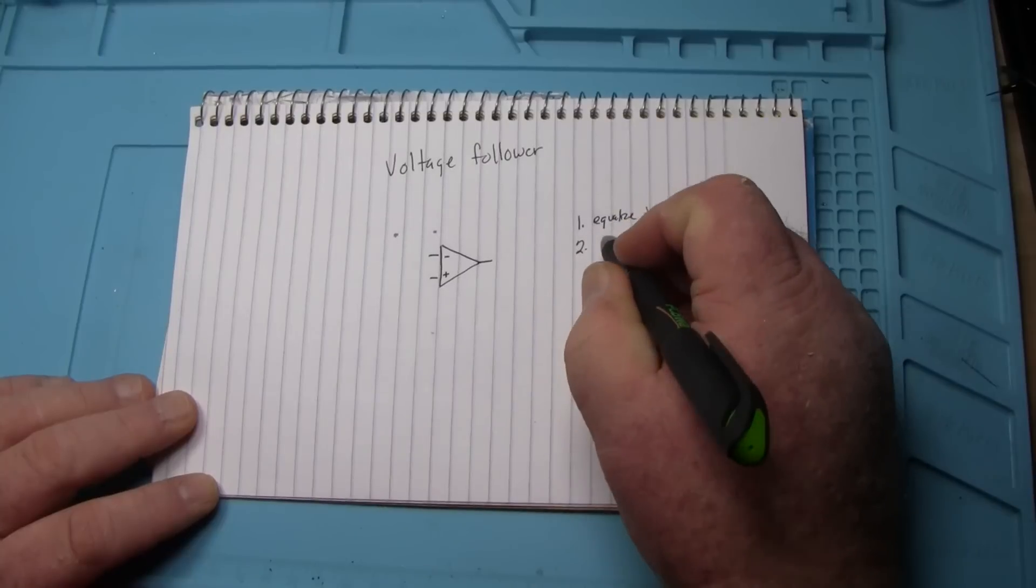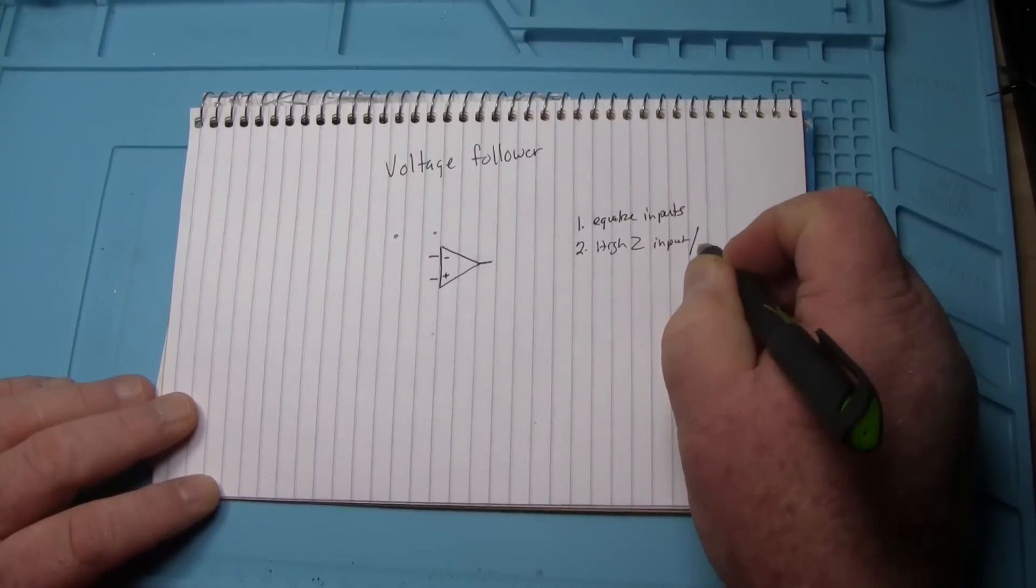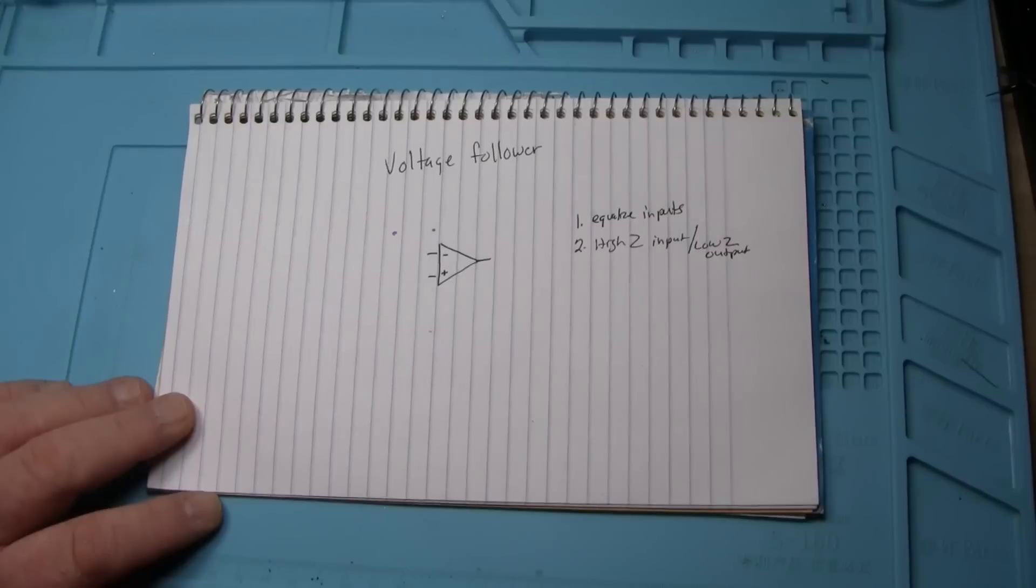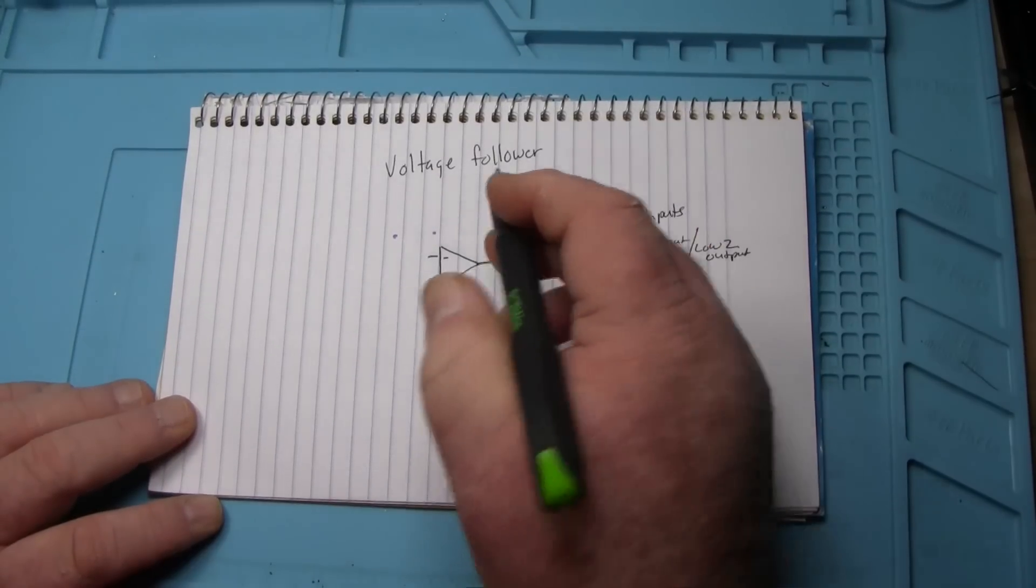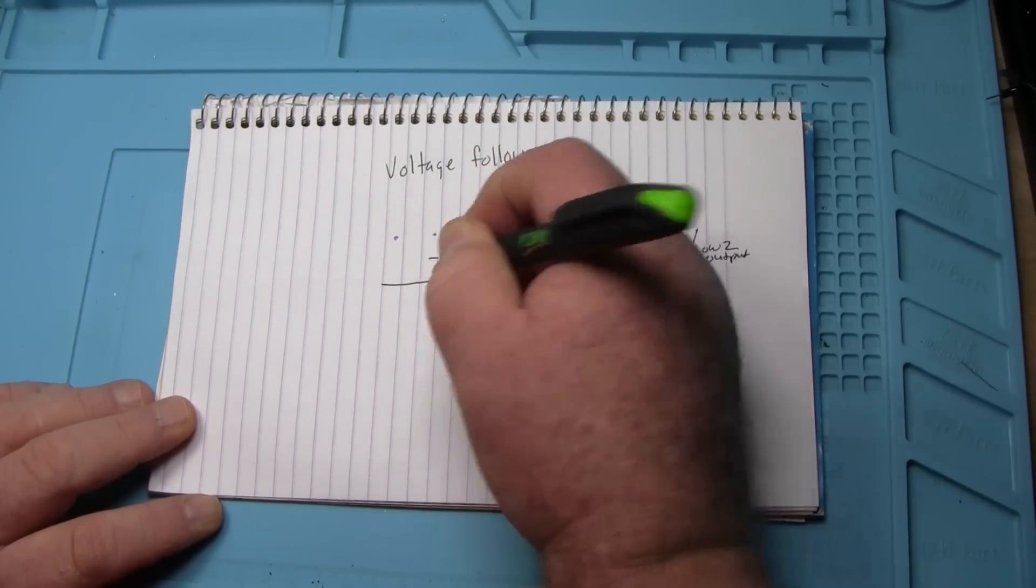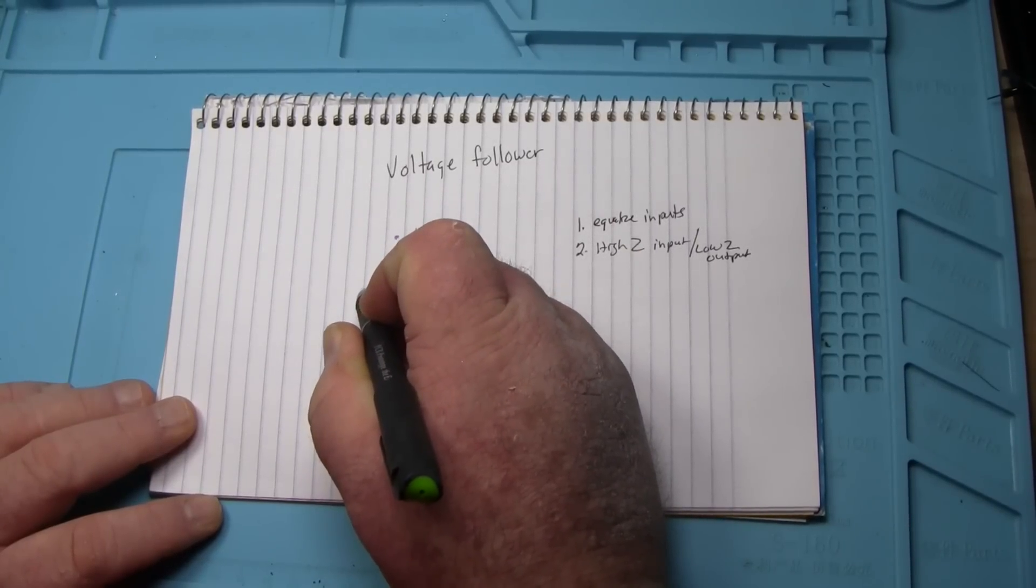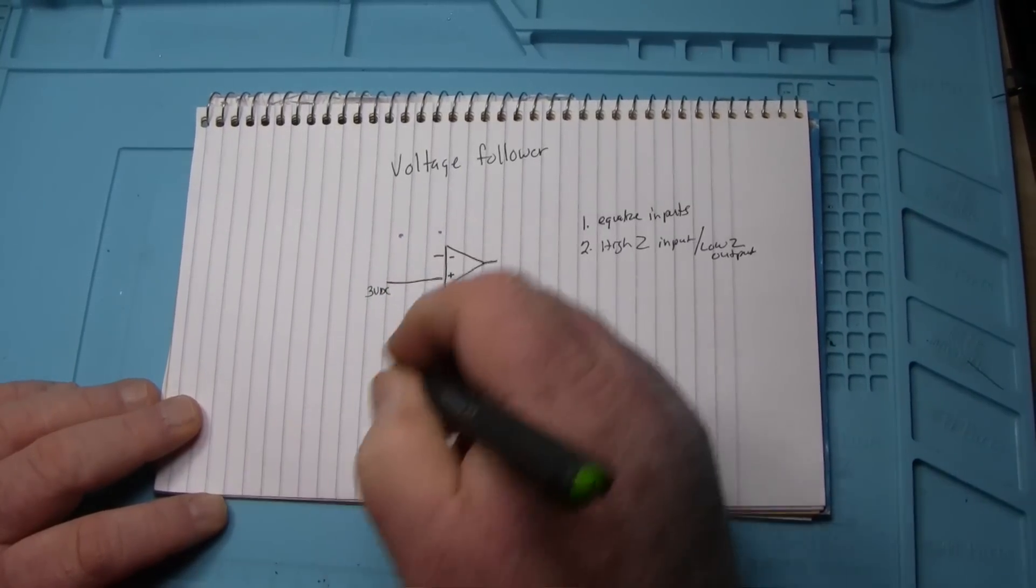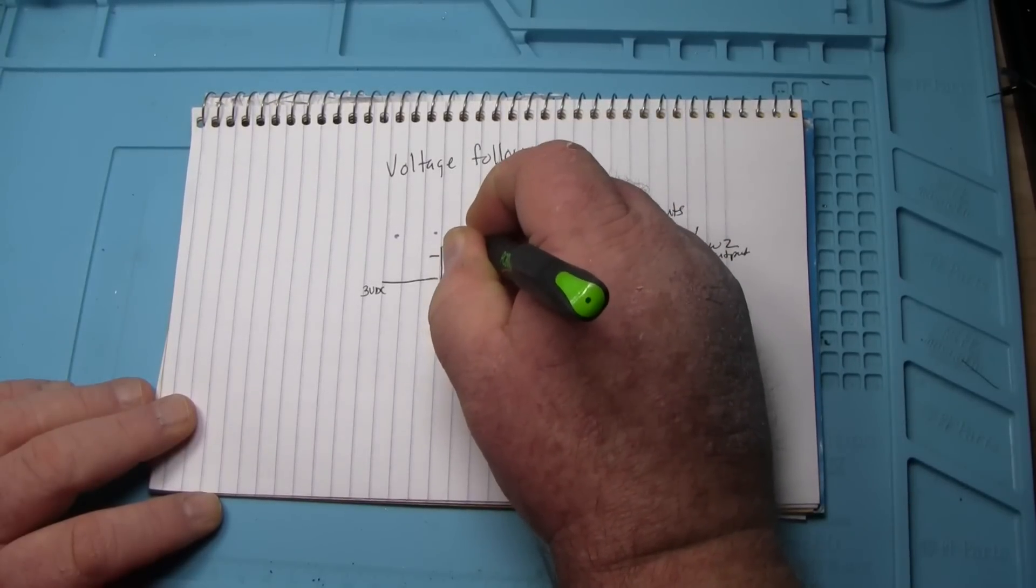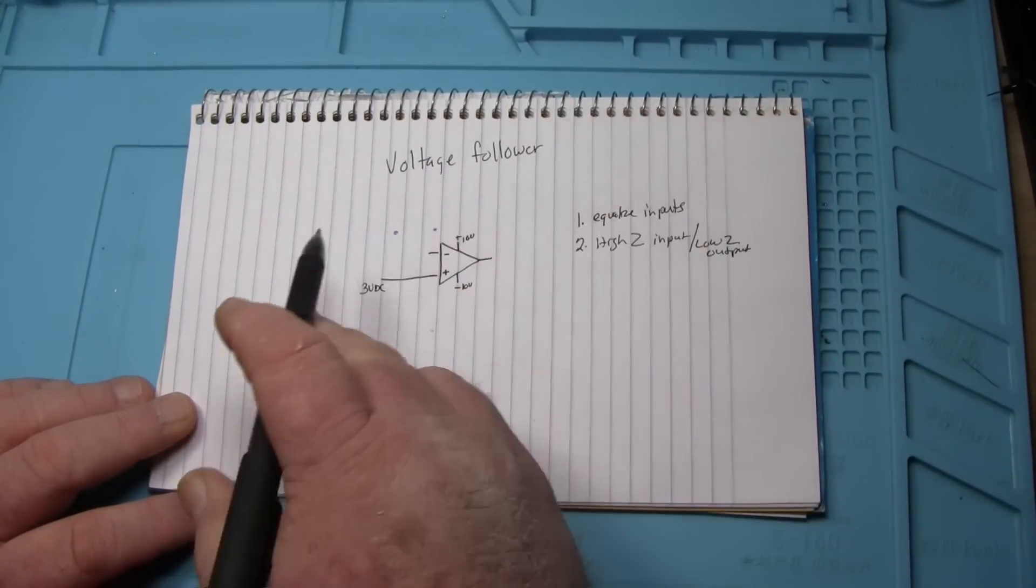And number two, the op-amp has a high impedance input and a low impedance output. We'll get to why that's important in a minute but let's do our voltage follower. So all we need is we're going to drive our input to the non-inverting input of the op-amp and let's say we're going to give it three volts DC. Now we also have our power supply for the op-amp and we'll just say we're going to drive it with plus 10 volts and minus 10 volts.